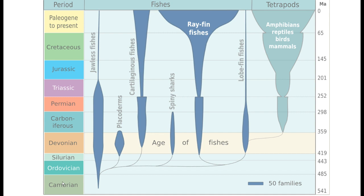Like every time in biology, nothing makes sense unless looked at in the light of evolution. So let's look at the family tree of all fishes. On the vertical y-axis we have geological time. We have the Paleozoic — the first period of animal life on planet Earth — which is composed of the Cambrian, Ordovician, Silurian, Devonian, Carboniferous, and Permian. Then we have the Mesozoic, the time of the dinosaurs, composed of Triassic, Jurassic, and Cretaceous. Then we have the Paleogene, the present period. Now, where do we have to start? In the Cambrian.